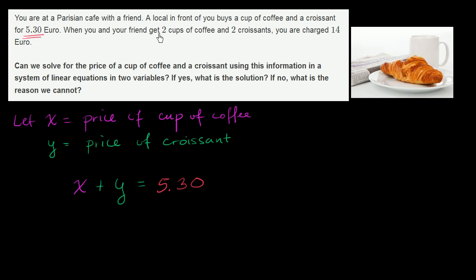Now, when you and your friend get two cups of coffee and two croissants, you're charged 14 euro. So what's an equation to describe this? We should be charged 2 times the price of a cup of coffee, so it should be 2x. And then we should be charged 2 times the price of a croissant, so plus 2y. And the sum of these should be the total amount that we're charged. We've been charged 14 euro.